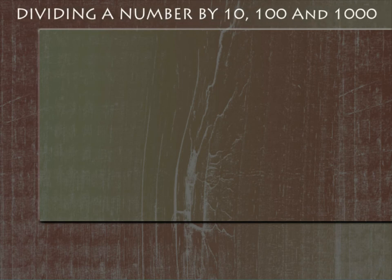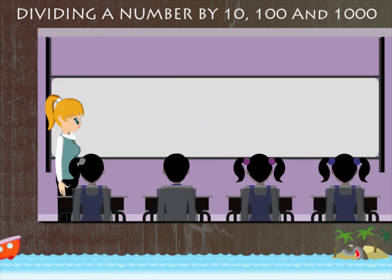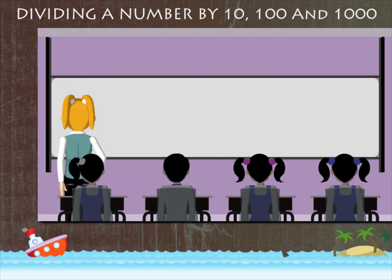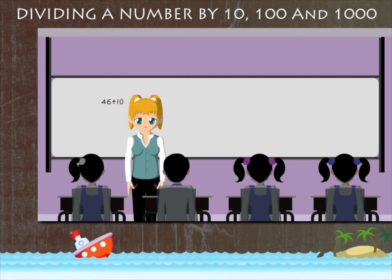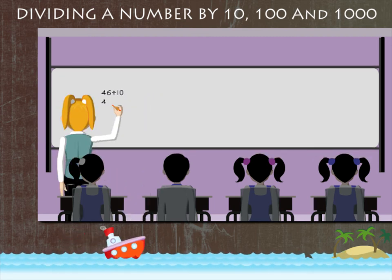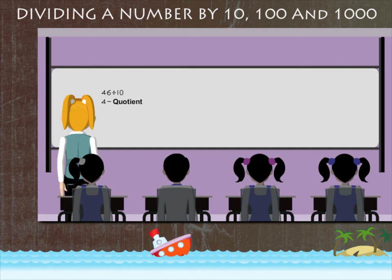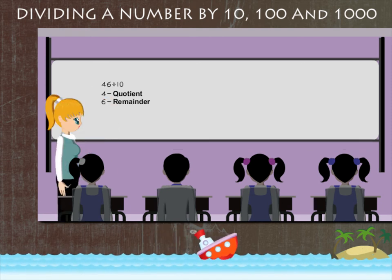Dividing a number by 10, 100, and 1000. Teacher Nancy is in her class and she puts the question on the board: 46 divided by 10. 4 is the quotient or the answer, and 6 is the remainder.